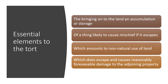To reiterate the essential elements of the tort — we're going to deal with each in turn. The first element is bringing onto land and accumulation or storage. The second is of a thing likely to cause mischief if it escapes. The third is which amounts to a non-natural use of land. And the fourth is which does escape and causes reasonably foreseeable damage to the adjoining property.